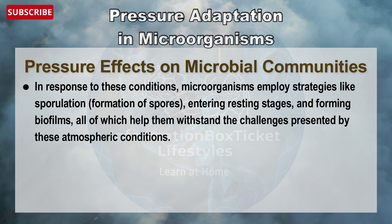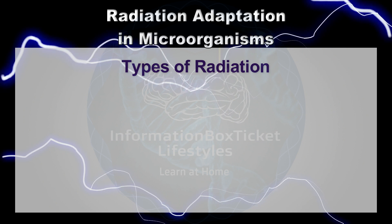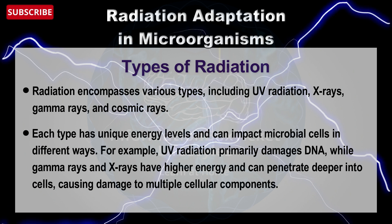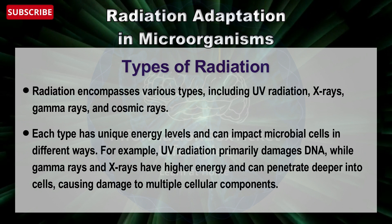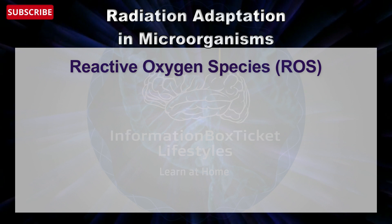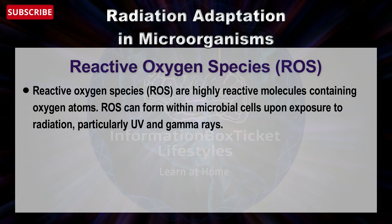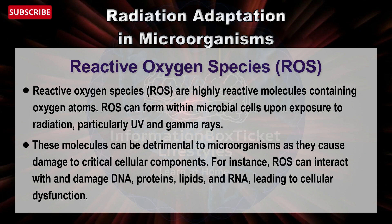Radiation encompasses various types including UV radiation, X-rays, gamma rays, and cosmic rays. Each type has unique energy levels and can impact microbial cells in different ways: UV radiation primarily damages DNA, while gamma rays and X-rays have high energy and can penetrate deeper into cells, damaging multiple cellular components. Reactive oxygen species — highly reactive molecules containing oxygen atoms — can form within microbial cells upon exposure to radiation, particularly UV or gamma rays. These molecules damage critical cellular components including DNA, proteins, lipids, and RNA, leading to cellular dysfunction.